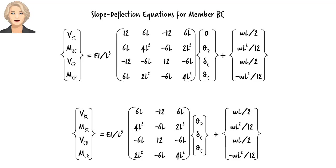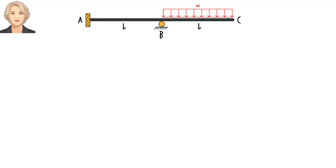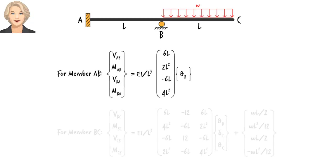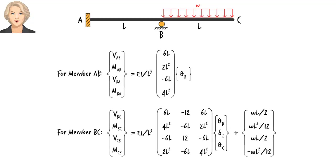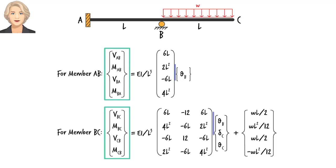Let's summarize what we have done so far. Given this beam, we have written an extended version of the slope-deflection equations in matrix form — here are the equations for member AB and here they are for member BC. These equations give us member end shear forces as well as bending moments in terms of slopes and displacements at the end joints.